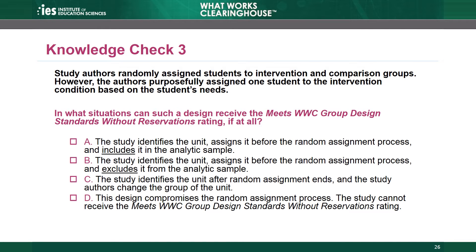Knowledge Check 3. Study authors randomly assign students to intervention and comparison groups. However, the authors purposefully assign one student to the intervention condition based on the student's needs. In what situation can such a design receive the Meets WWC Group Design Standards Without Reservations rating, if at all? Choice A: The study identifies the unit and assigns it before the random assignment process and includes it in the analytic sample. Choice B: The study identifies the unit and assigns it before the random assignment process and excludes it from the analytic sample. Choice C: The study identifies the unit after random assignment ends and the study authors change the group of the unit.